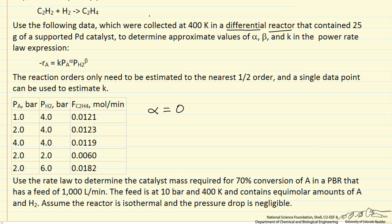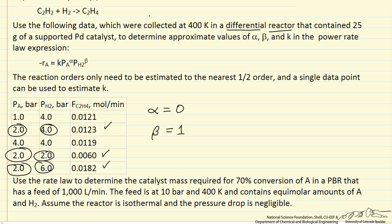We're going to do the same thing now for the pressure of hydrogen. We'll look at the data where the pressure of A is constant and the pressure of B changes. Just by inspection, you'll notice as we go from 2 to 4 bar, the rate doubles; we go from 2 to 6 bar, it triples. So beta is approximately 1 — first order.